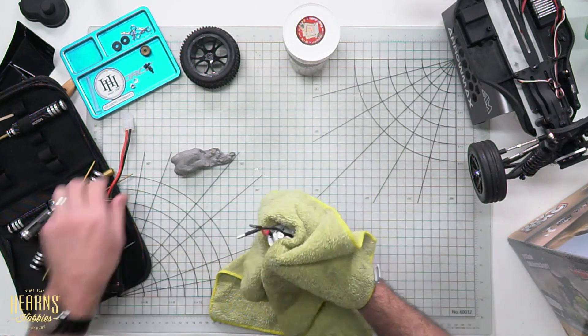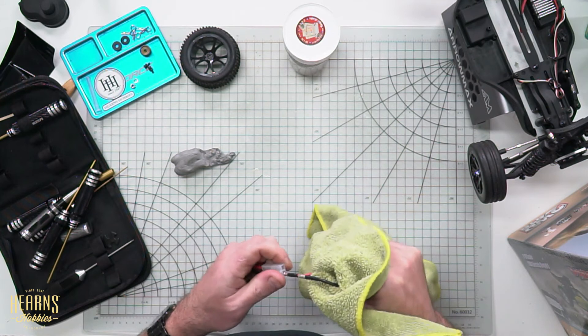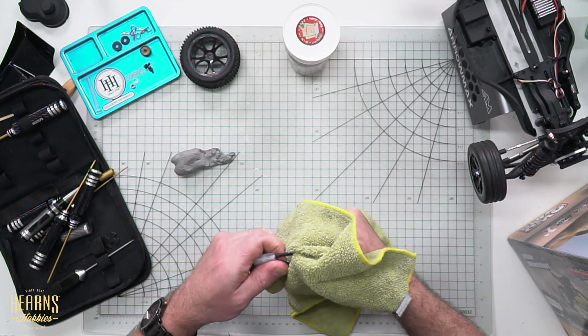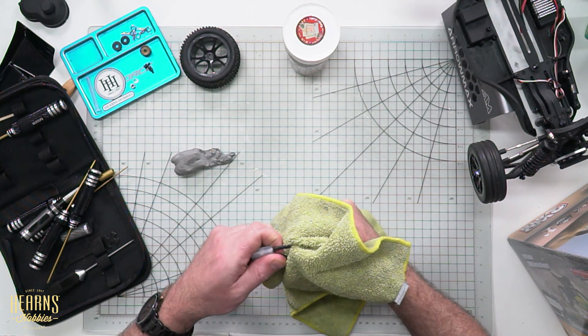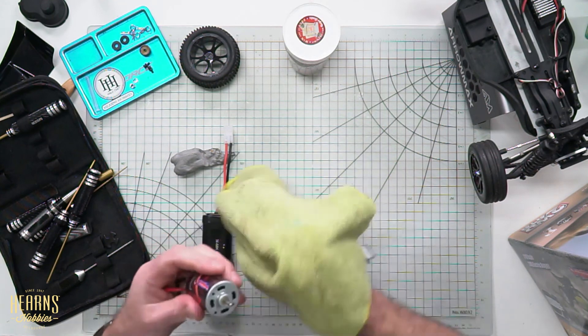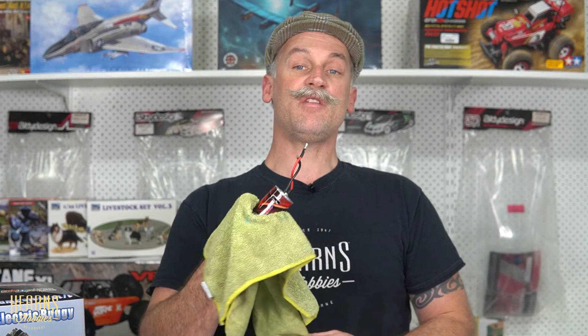Then I'm going to hold it into a rag and give it a quick spin to ensure that all the water is out. Can you hear how nice and smooth that sounds? And there we go. That is ready to be put back in the car and run. And that's how I clean a sealed 540.